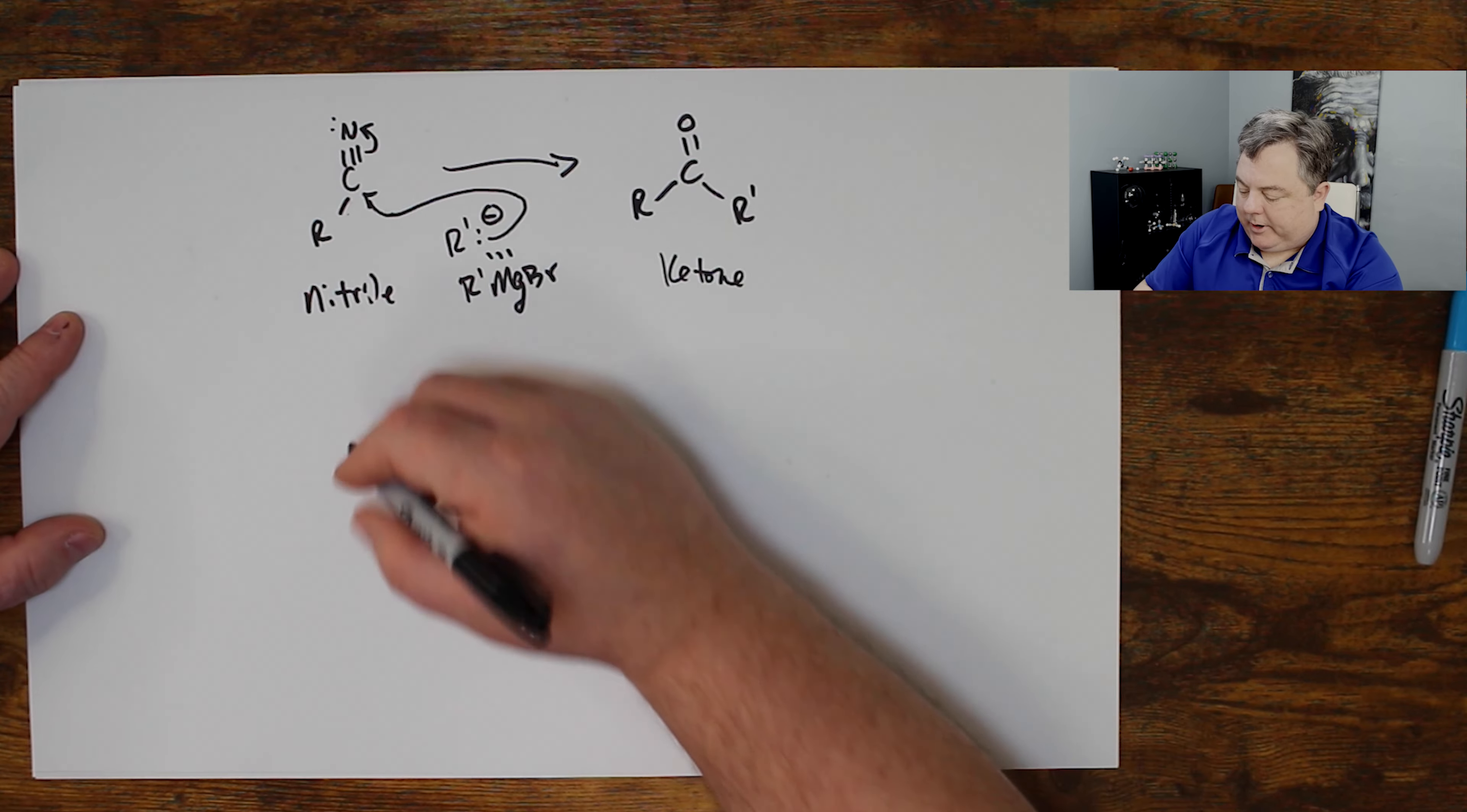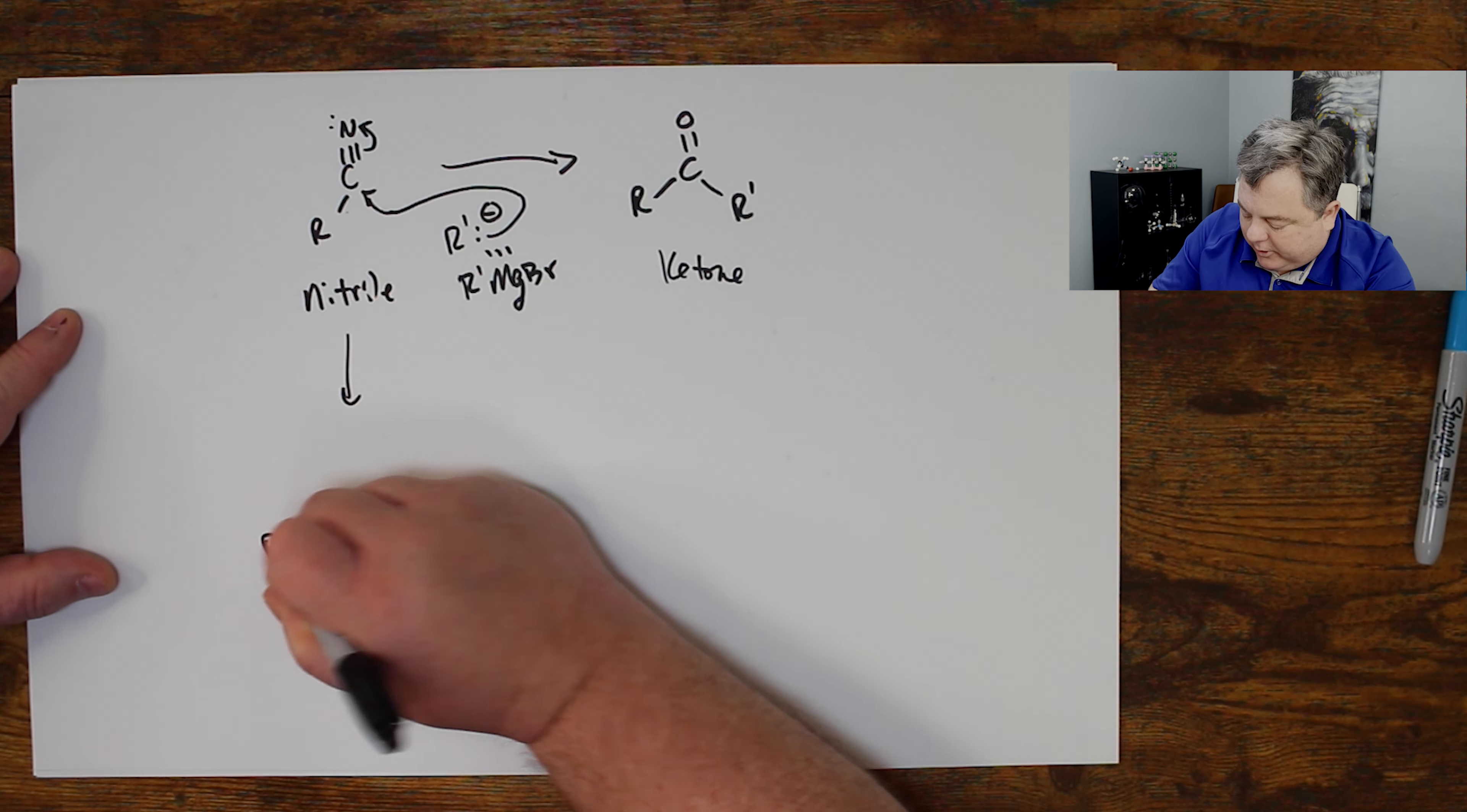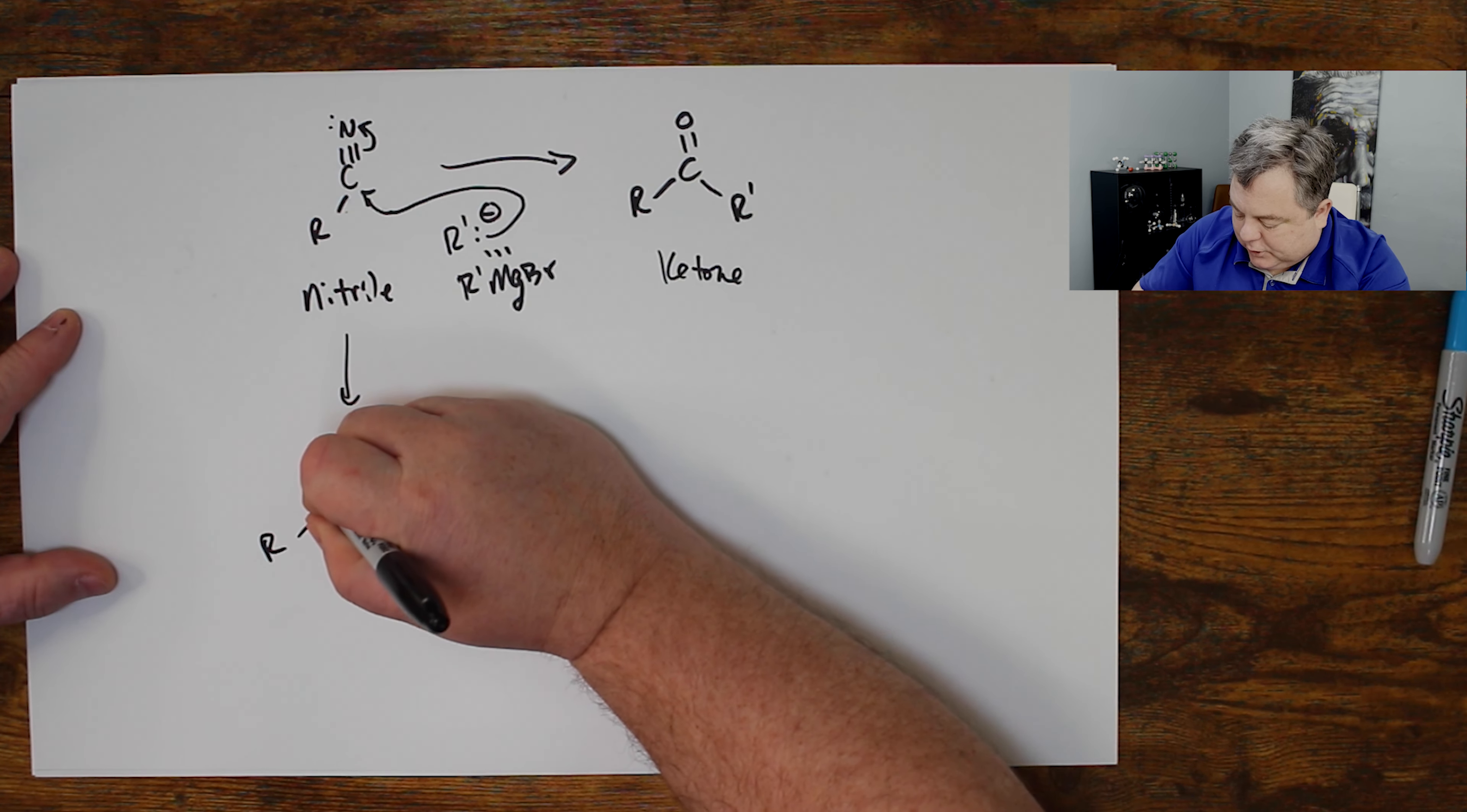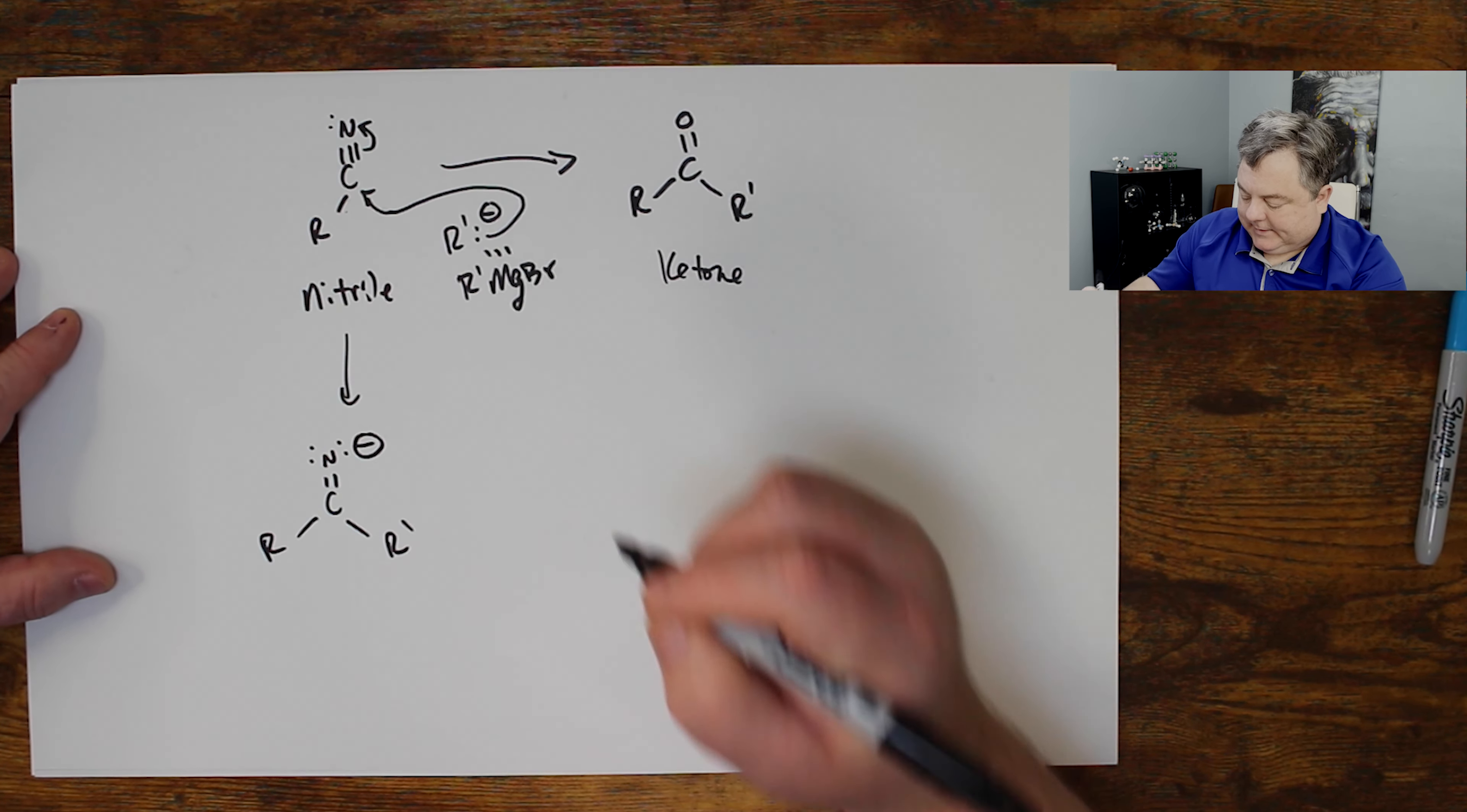And this starts with one lone pair on that nitrogen. So let's see what that makes. My carbon has this R group on it. This R prime just attacked that carbon. And my C triple bond N becomes a double bond N with two lone pairs on the nitrogen. It has a negative charge.